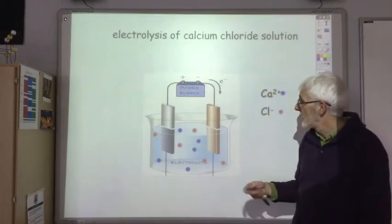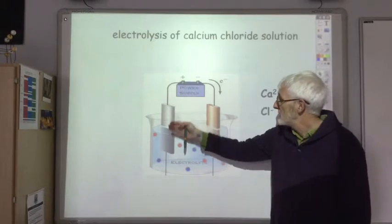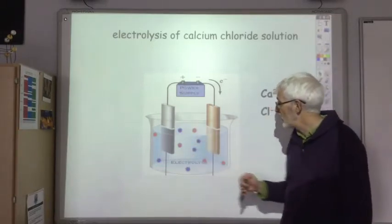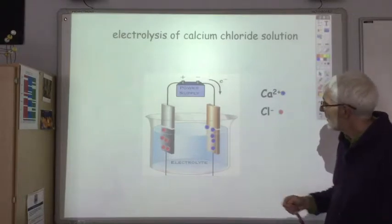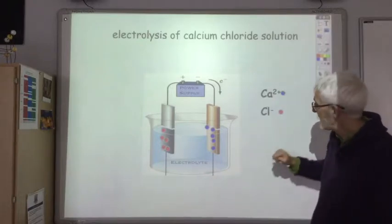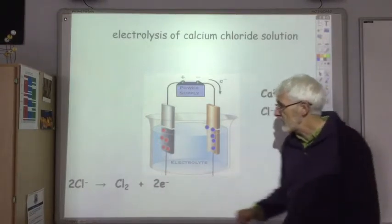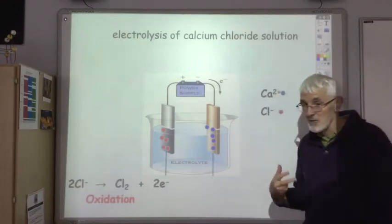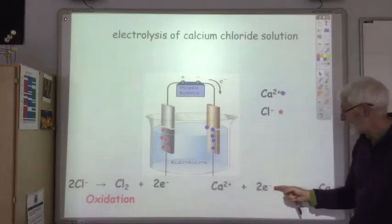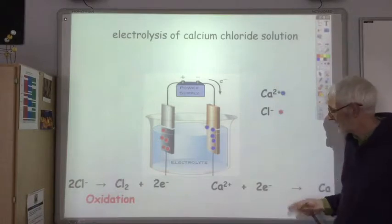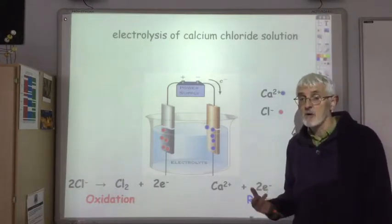When we turn on the power, the negative electrode attracts all the positive ions — the calcium ions — and the positive electrode attracts the negative chloride ions. At the positive electrode, the chloride ions lose electrons and turn into chlorine gas — that's an oxidation reaction. More interestingly for metal extraction, at the negative electrode the calcium ions gain electrons to turn into calcium metal, which is what we want. That's a reduction reaction. All extractions of metals from ores are reduction reactions.